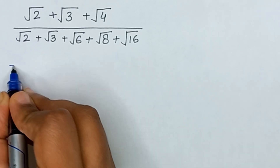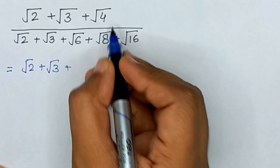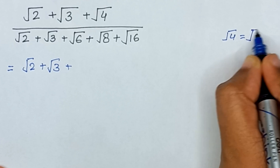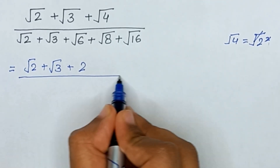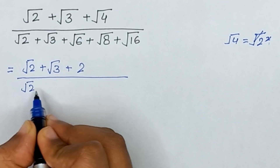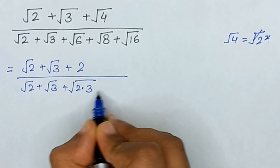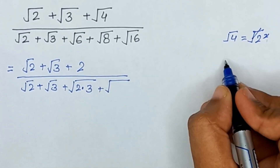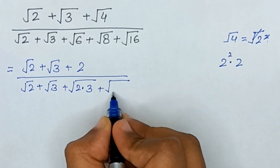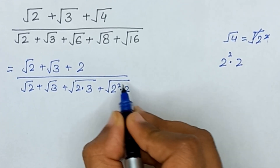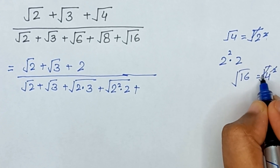Let's start our question. Here we have square root of 2 plus square root of 3. Square root of 4 is the same as square root of 2 squared, so the square and square root cancel out — square root of 4 is 2 — divided by square root of 2 plus square root of 3. Also, 6 is the same as 2 into 3, and 4 is the same as 2 squared, and 4 into 2 gives 2 squared into 2.